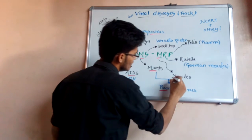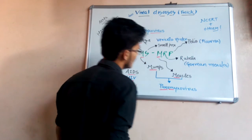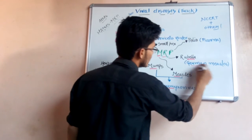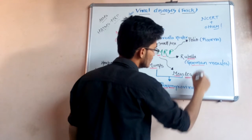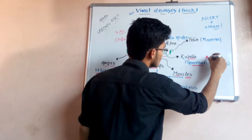M in MRP means measles, which is also caused by paramyxovirus. R, that is rubella, which is known as German measles. This is very important from an examination point of view.